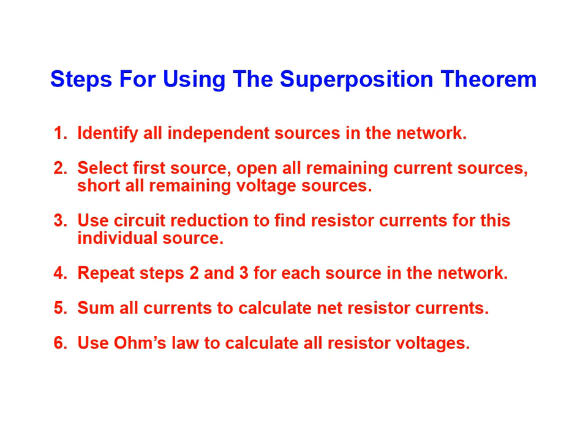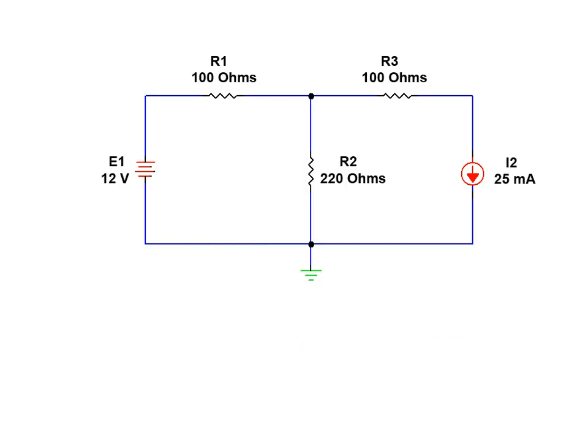We will now move on to a practical example and demonstrate the approach on a simple two source linear DC network. In this example we'll be examining the simple DC network shown here. In this circuit we have three resistors, a voltage source, and a current source.